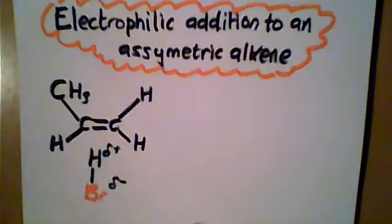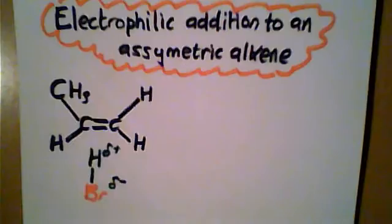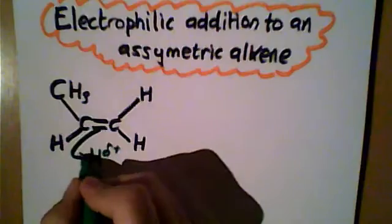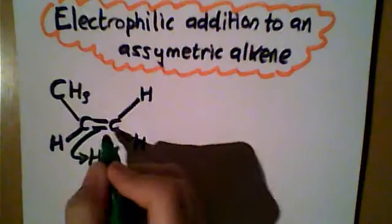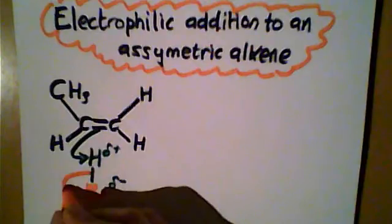A pair of electrons will move from the double bond onto the electrophile, this hydrogen here, and therefore again this bond will break and the pair of electrons will move onto the bromine atom.